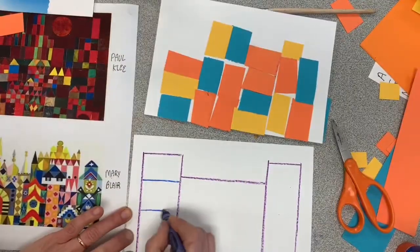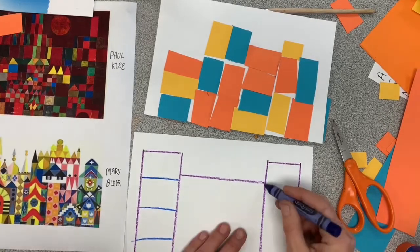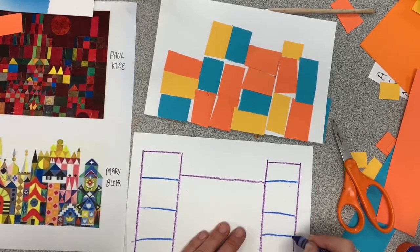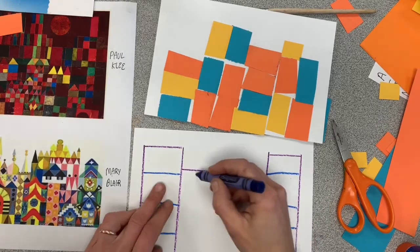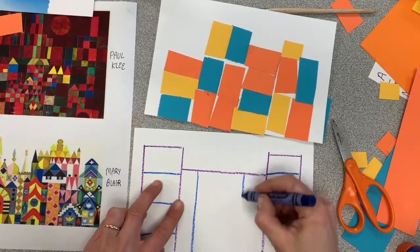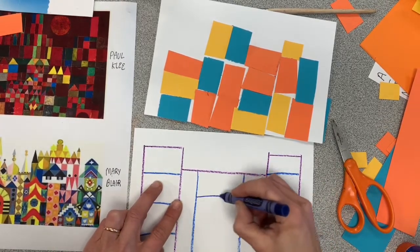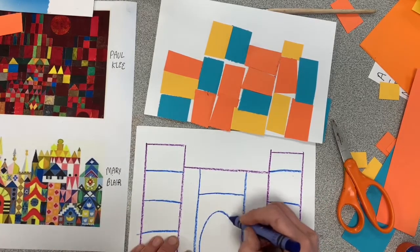With both of these castles, it's all about the details. So I'm going to start dividing my sections of the castle into bits. I can use my ruler or just freehand it. And my lines aren't perfectly straight, but that's okay. I'm doing my best.